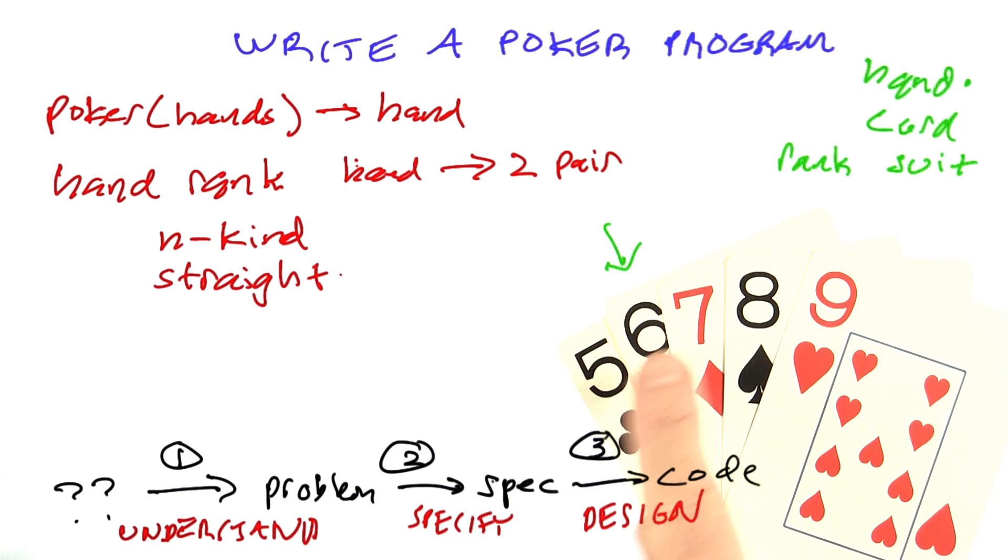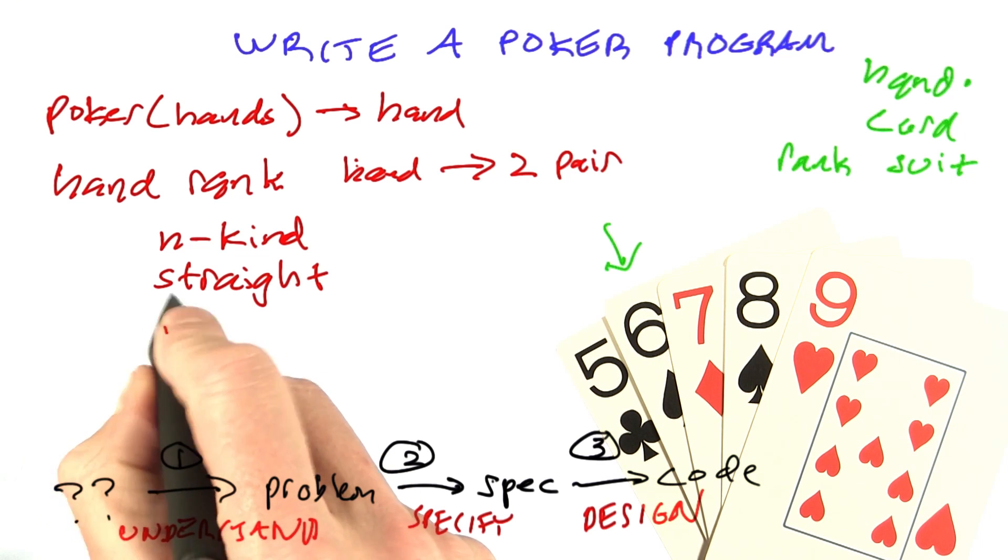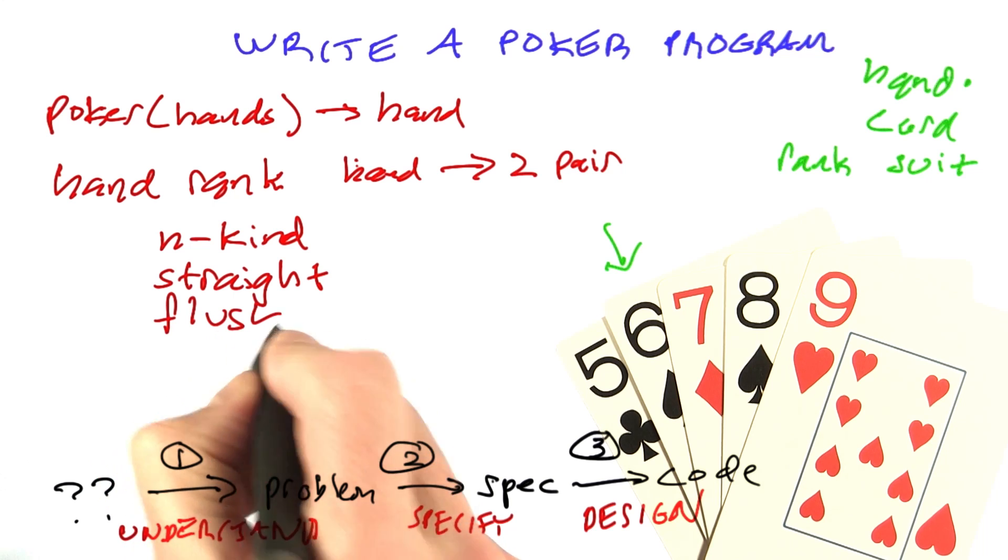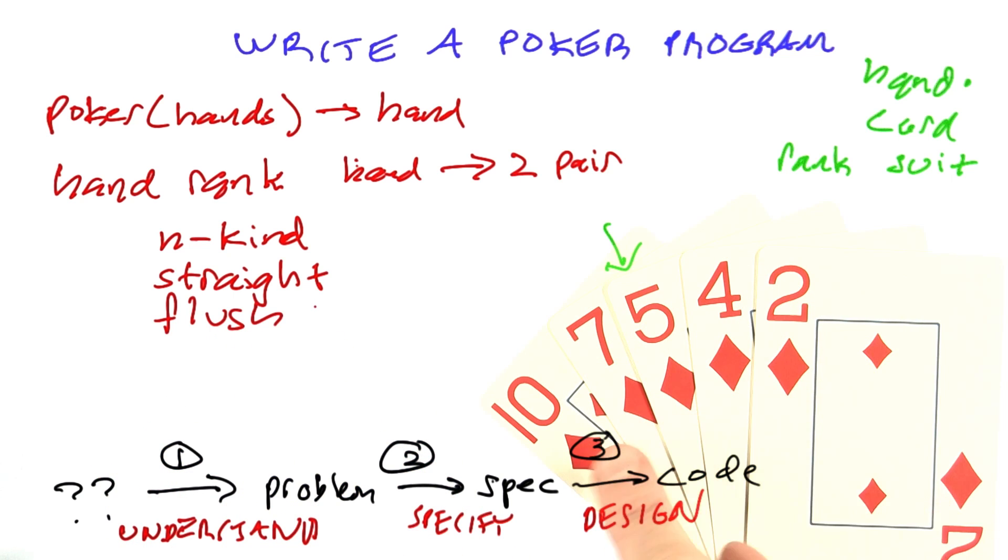This hand is a straight, 5-6-7-8-9, because it's five consecutive ranks. The suits don't matter. Then the notion of a flush. This hand is a flush because all five cards have the same suit, and the ranks don't matter.